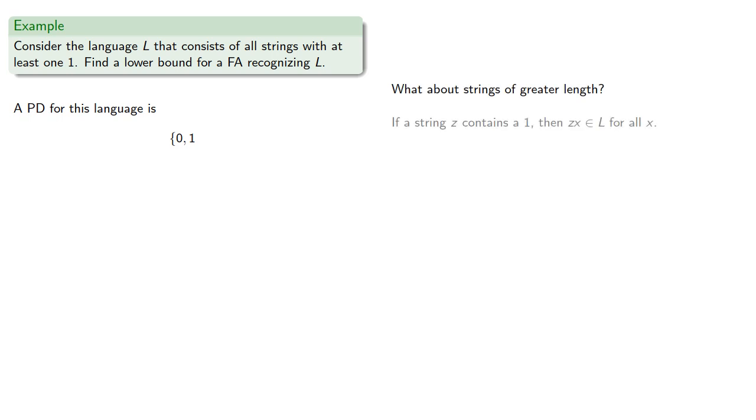So if a string z contains a 1, then z concatenated with x is going to be in L for all x. But since 1x is in L, then z can't be distinguished from 1.